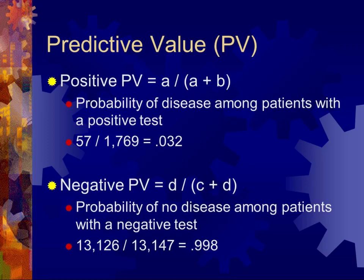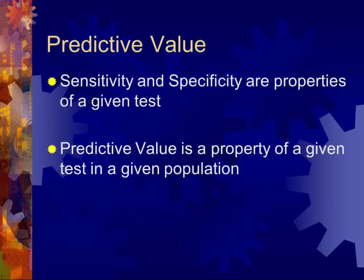The negative predictive value — D over C plus D — is the probability of no disease among patients with a negative test. In this case it is 0.998. Practically, if a patient gets back a negative PSA, you can let them know with a high degree of certainty that they do not have prostate cancer. But a positive test is about 1 in 30 — it doesn't mean they have cancer, but the probability is dramatically different from those without a positive PSA.